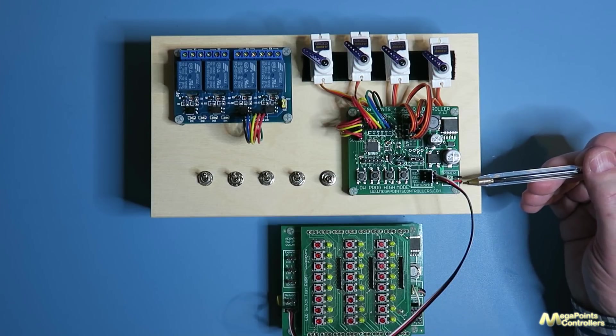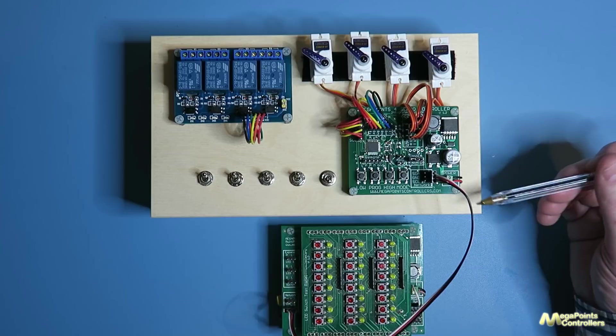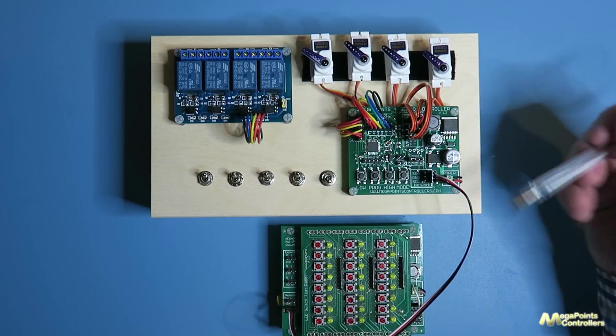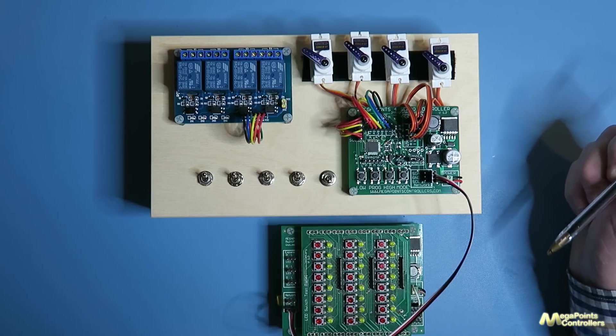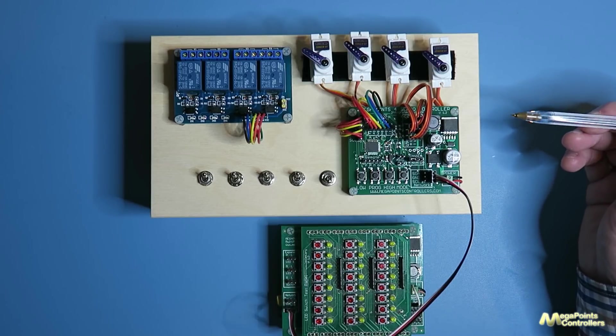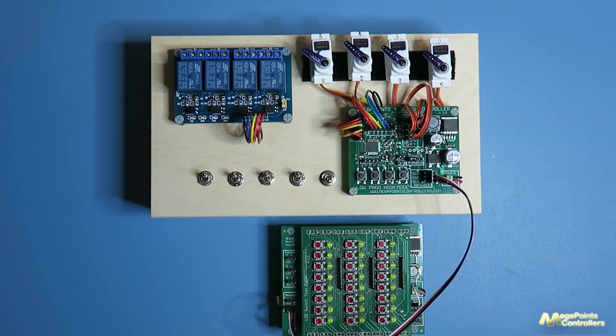And there's the unit operating. The relays are synchronized and clicking away as we'd expect. Power is from 9 to 12 volts. 13.8 is the absolute maximum because we have a 16-volt input capacitor and we want to stay below that. Thanks for watching the video on the Servo 4R integrated relay controller. I hope it was useful, and it's available immediately from our website. Thanks for watching.